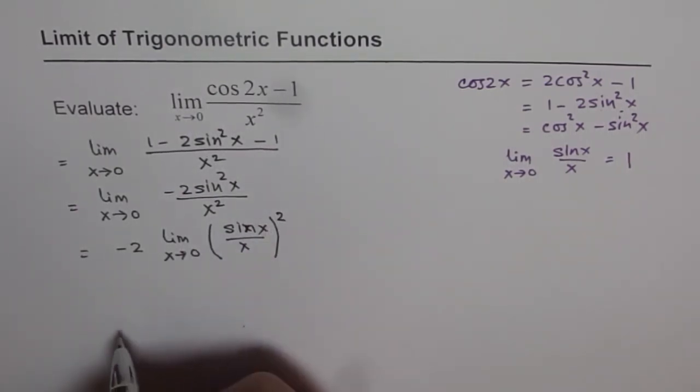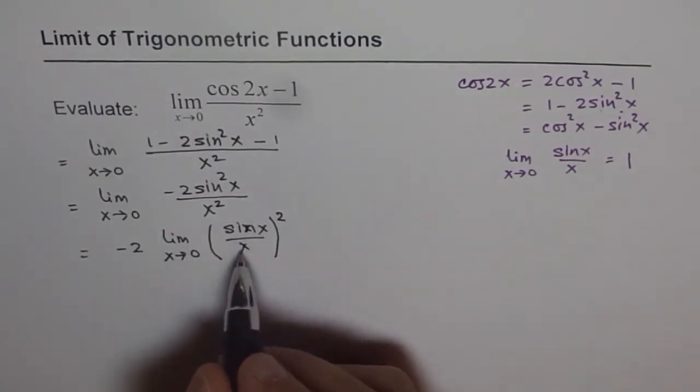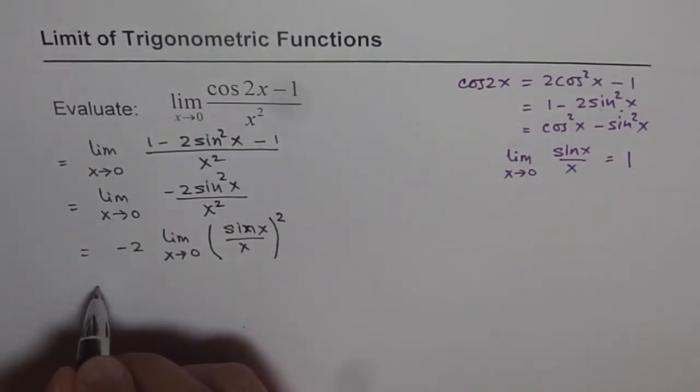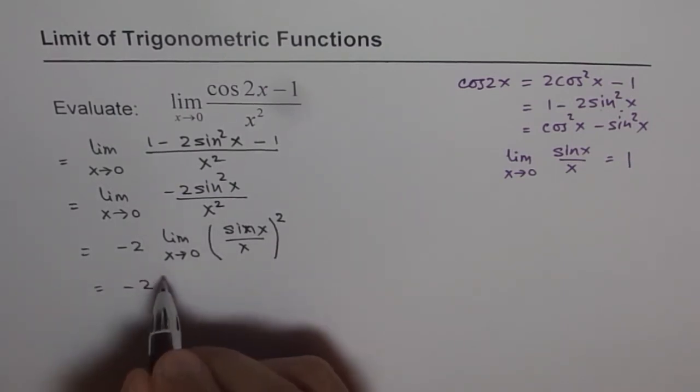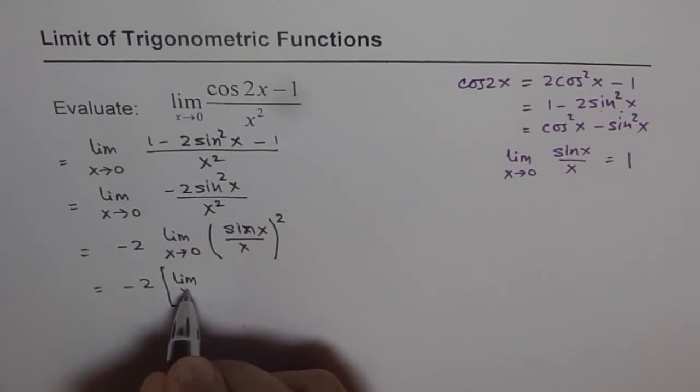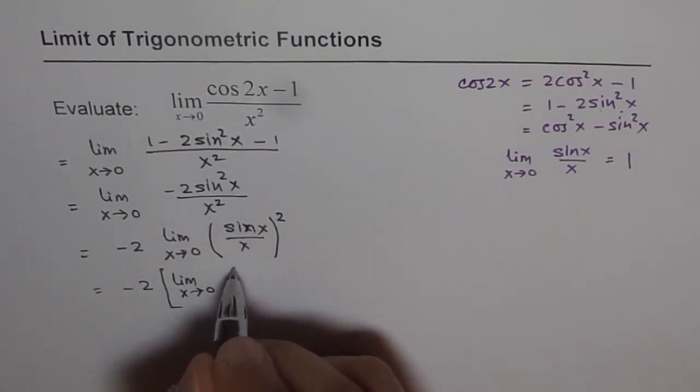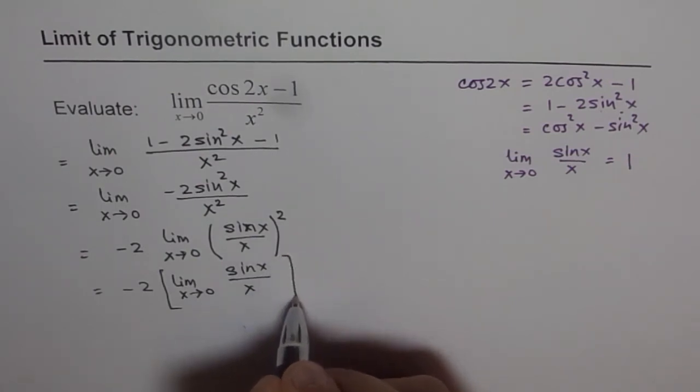Now limit of sin x over x is actually 1. So we can write this as minus 2. And within bracket, we will write limit x approaches 0 for sin x over x whole square.